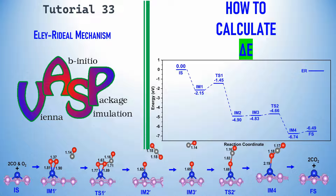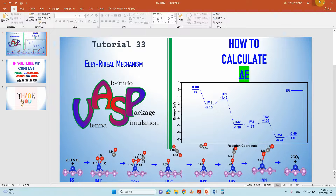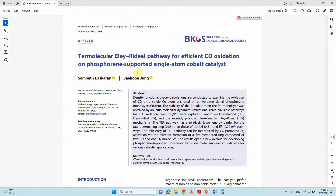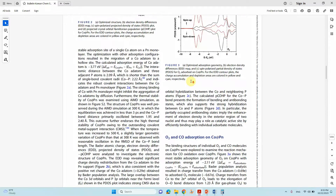Dear friends, this is tutorial 33 in VASP. In this tutorial you can learn how to calculate ΔE for a Li-Eley-Rideal (ER) mechanism. This is the model energy profile for the ER mechanism. I will show you one of my papers published in the Bulletin of the Korean Chemical Society on the molecular ER pathway for effective CO oxidation on a phosphorene-supported single atom catalyst.